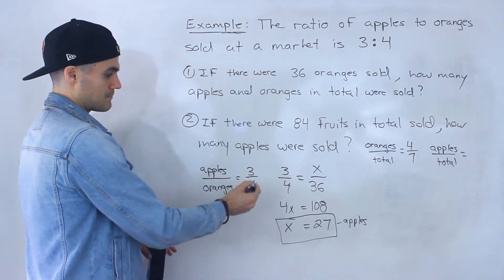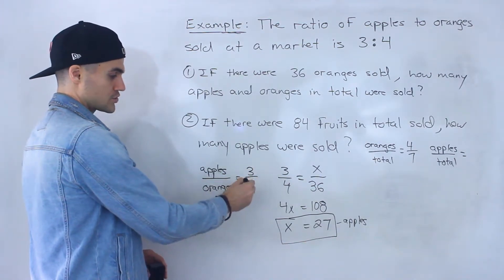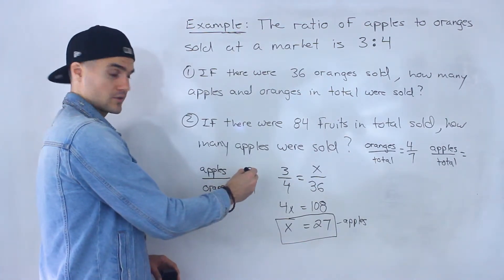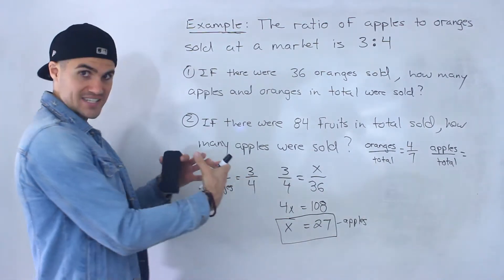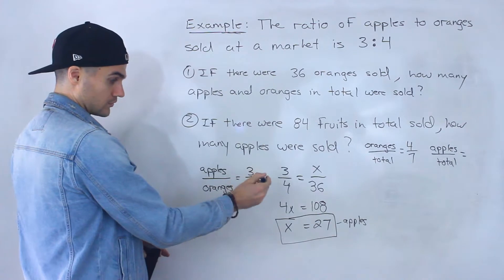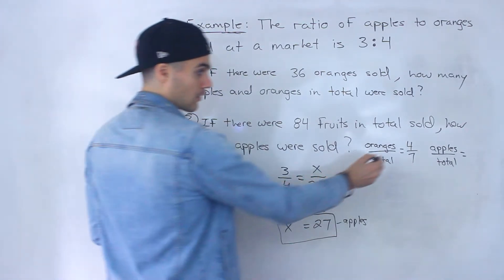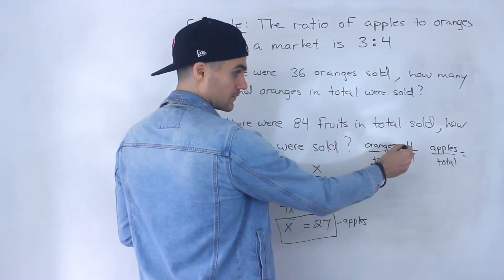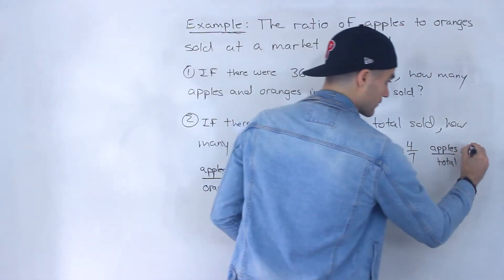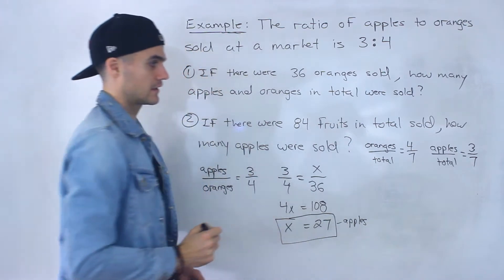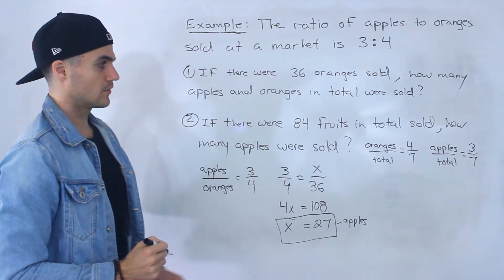Because what that means is that for every 4 oranges sold, there are 3 apples sold. So that means for every 7 fruits in total sold, 3 plus 4, there are 4 oranges sold. And then the apples to total ratio would be 3 over 7, like that.